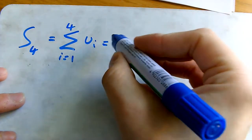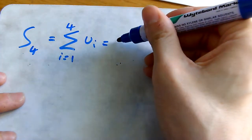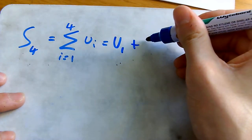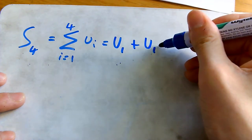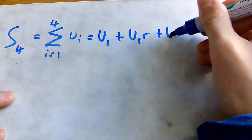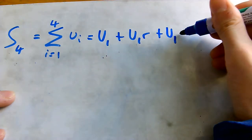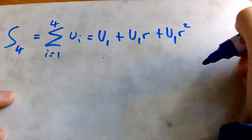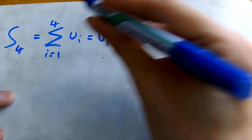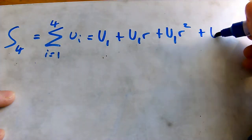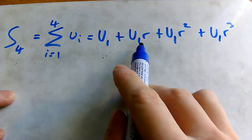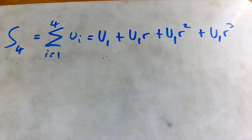The sequence is going to be a general one, so it would start off with u₁. Because it's geometric, the next term would be u₁ multiplied by r, the next would be u₁ multiplied by r again — so overall it'd be r squared. And then the fourth term, which is going to be the final one, would be u₁ multiplied by r cubed. So that is the first four terms of this general geometric sequence.